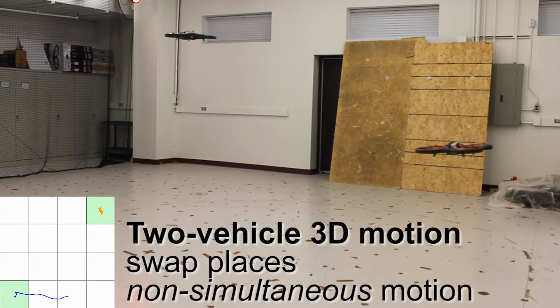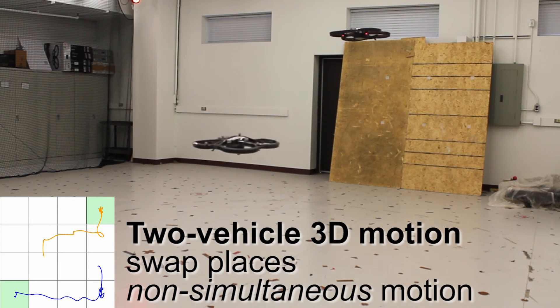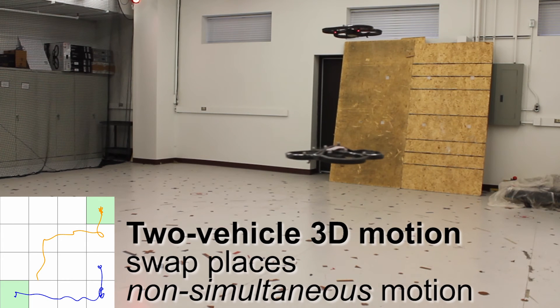First, we employ a precomputed hybrid controller that disables simultaneous motion, eliminating the non-determinism. The high level strategy commands the vehicles to take turns moving. While not the most efficient, the task is eventually completed.